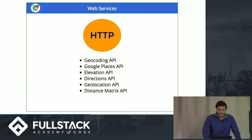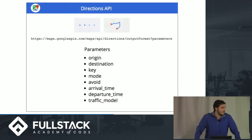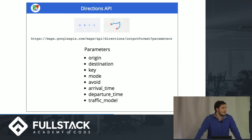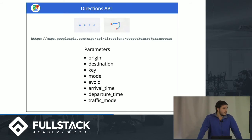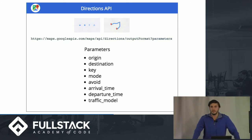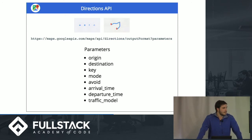With the Directions API, just using the API endpoint with simple URL parameters, you can do a lot of things. The only required ones are origin, destination, and key. From just those, you'll get a JSON response with a lot of detailed information that you can incorporate into your apps.